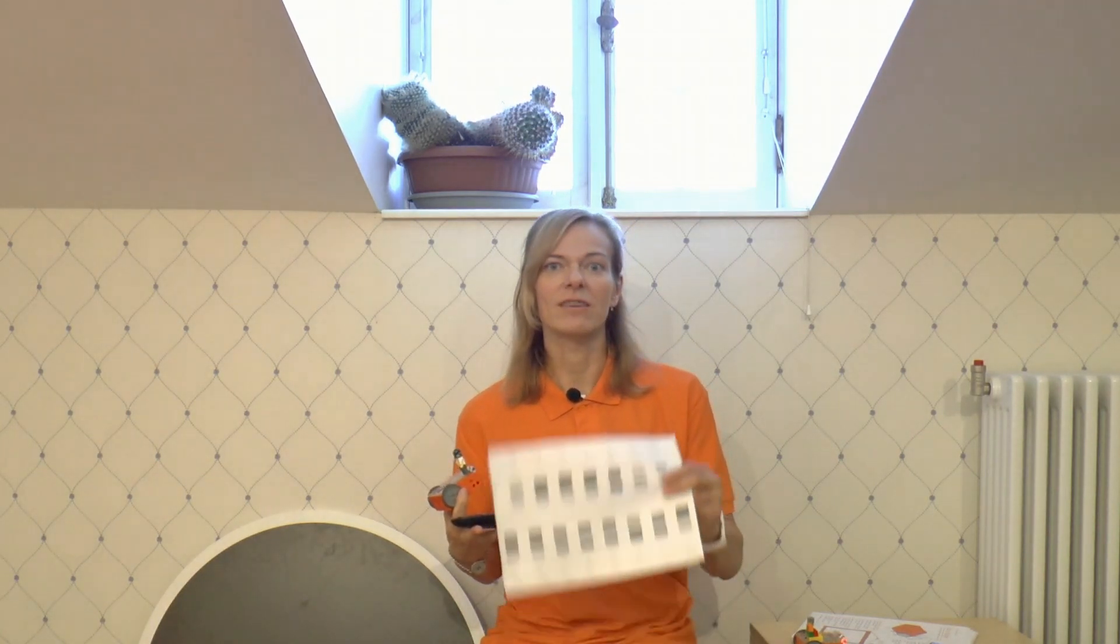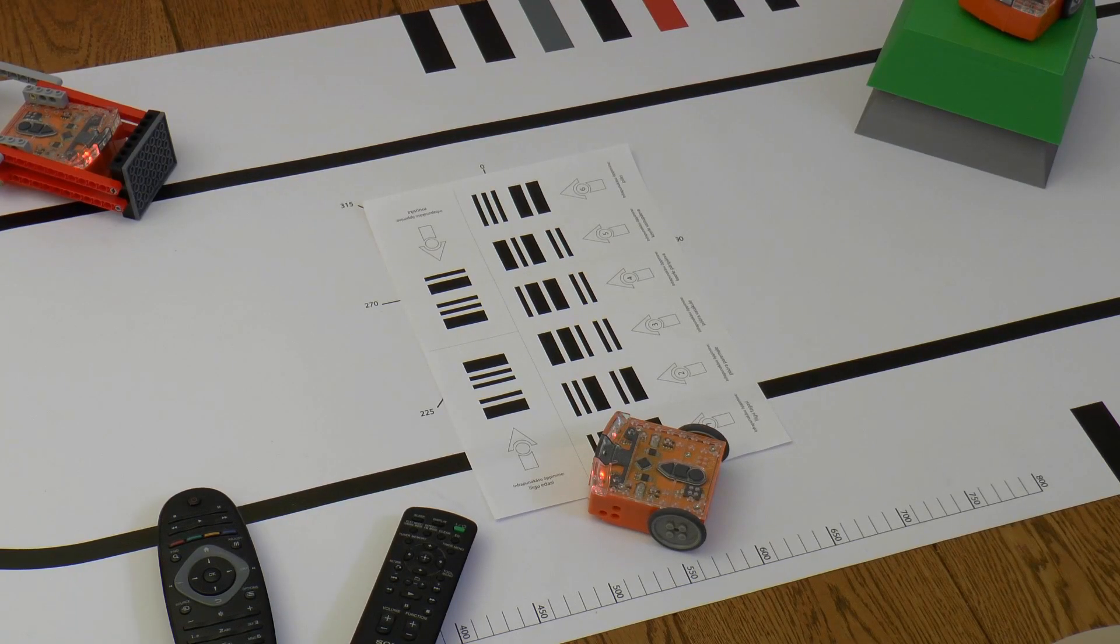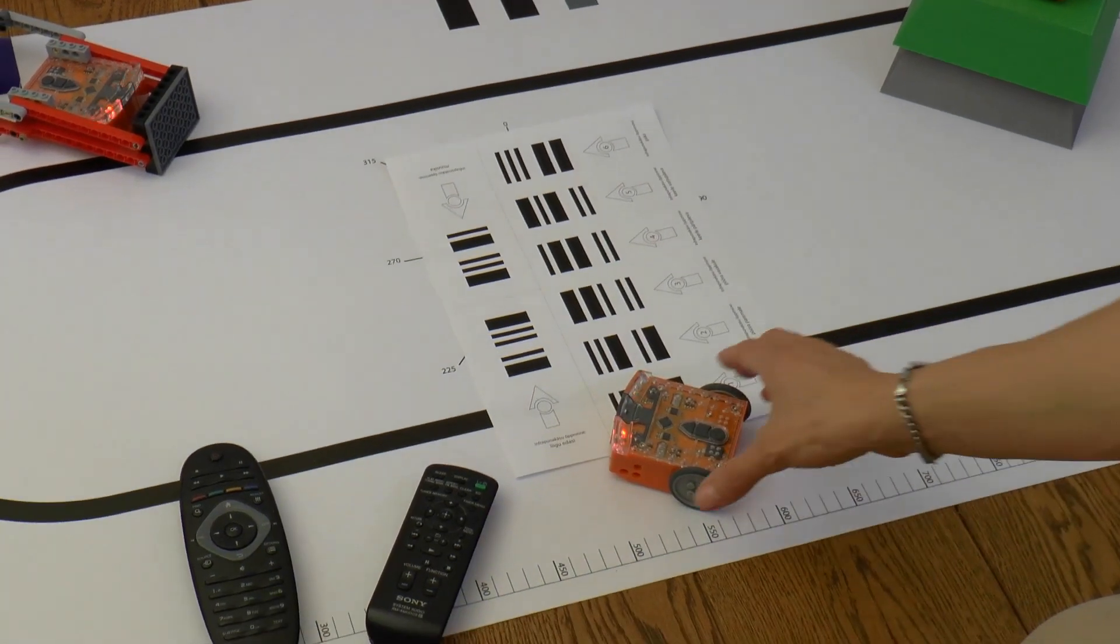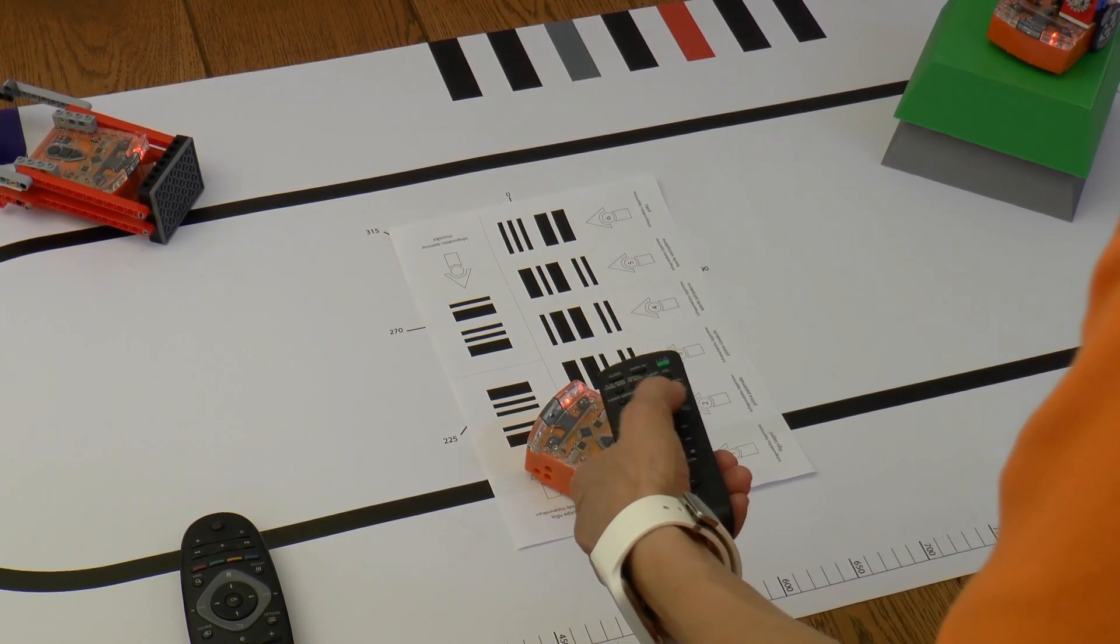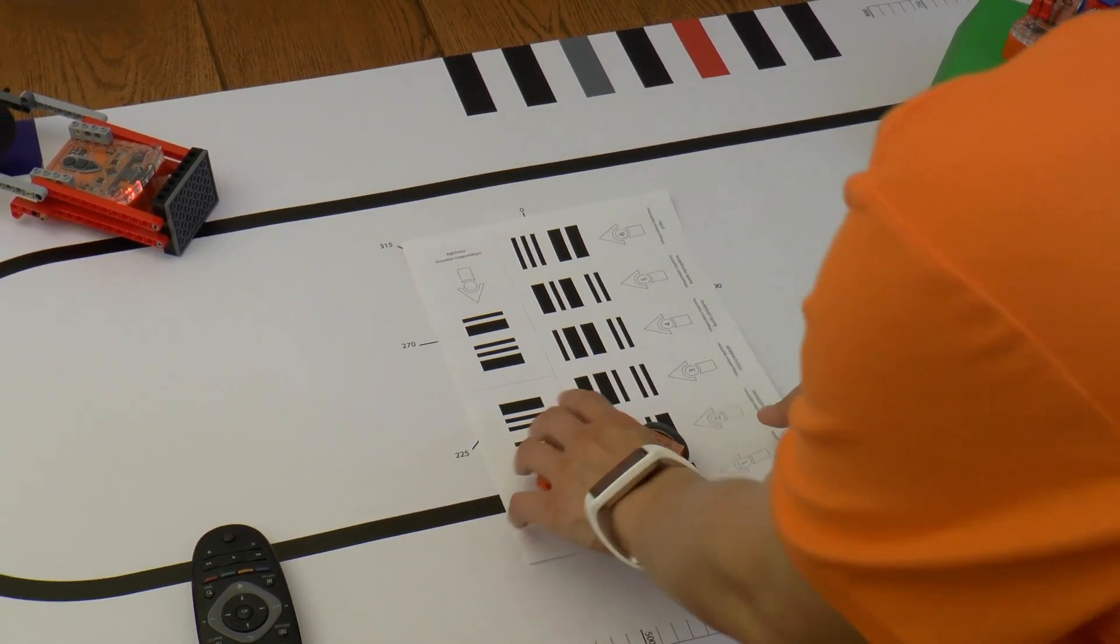For this you will certainly need the specific barcodes. If you feel you just want to play with Edison like an RC car, then you will need an infrared remote and the infrared extra commands barcode sheet.